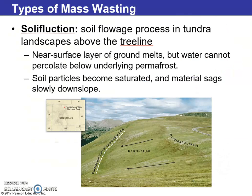Solifluction is a soil flowage process found in tundra — landscapes above the tree line — and we see this in arctic regions typically. In the near-surface layer, the ground thaws in summer but water cannot percolate down into the earth through the permafrost below in the lithosphere. Soil particles become saturated and the material sags downslope.